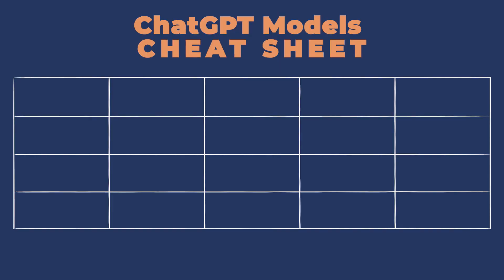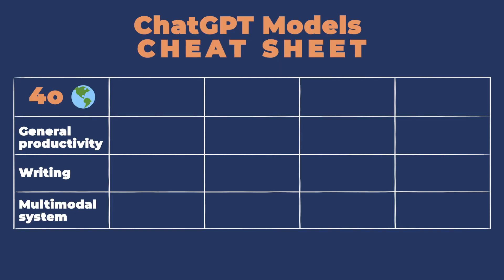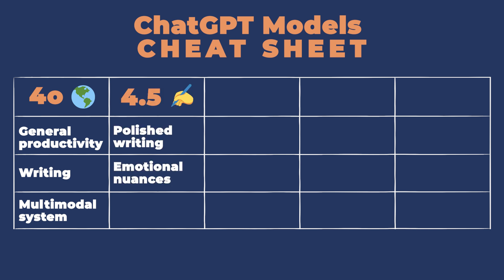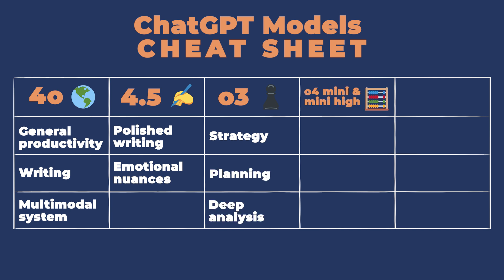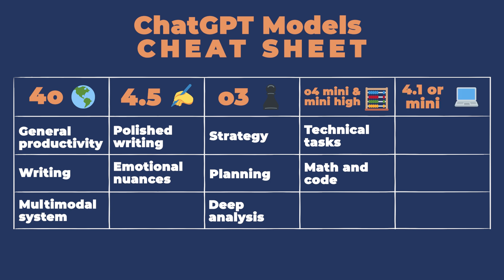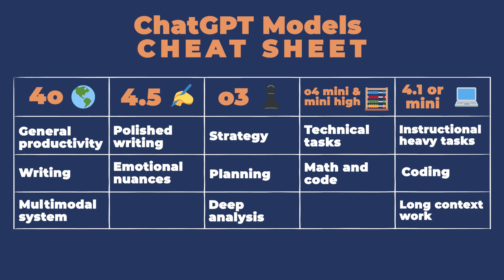So which model is best for you? Here's your cheat sheet. Use 4.0 for general productivity, writing, and multimodal tasks. Use 4.5 for polished writing or emotional nuance. Use O3 for strategy, planning, and deep analysis. Use O4 Mini and Mini High for technical tasks like math and code. And use 4.1 or 4.1 Mini for instruction-heavy, coding, or long-context work.